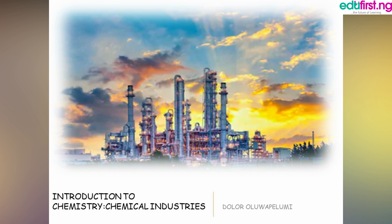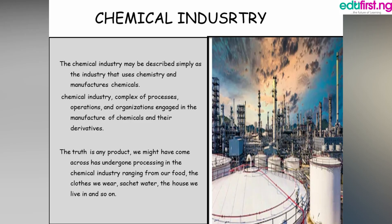Hello everyone and welcome to class. In today's class we'll be looking at chemical industries — this is an introduction to chemistry. The chemical industry may be described simply as the industry that uses chemistry and manufactures chemicals. It involves complex processes, operations, and organizations engaged in the manufacture of chemicals and their derivatives.